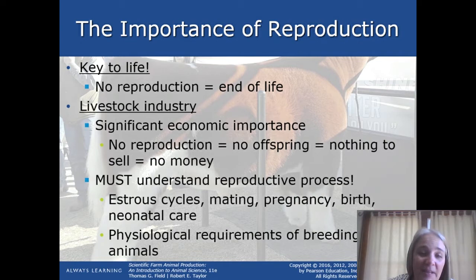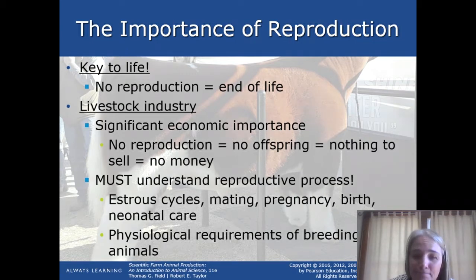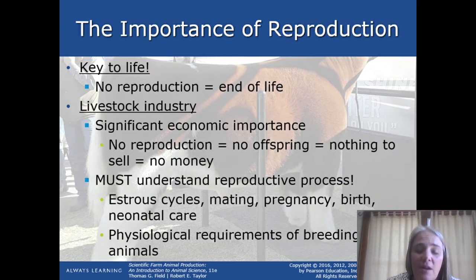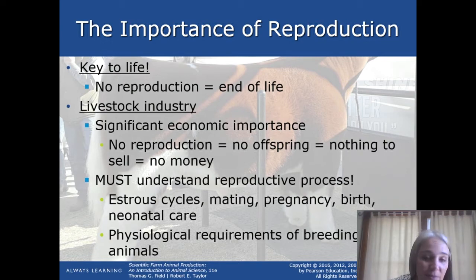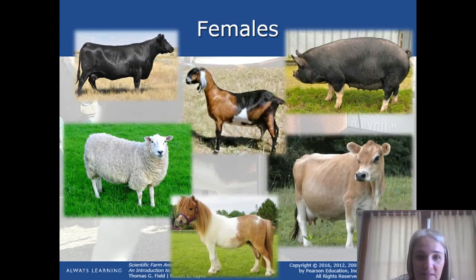For example, if a cow is not reproducing and doesn't have any calves, there is nothing to sell to offset her costs, so she is hard to keep around. Producers need to know the reproductive process, including estrous cycles, mating systems, pregnancy, birth, neonatal care, and how to pick animals to breed to. There's a lot of details involved.